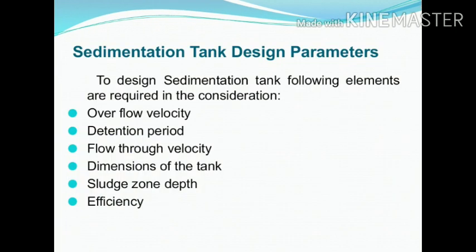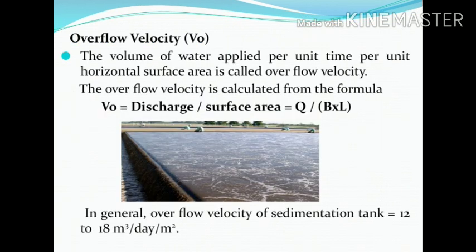Sedimentation tank design parameters. To design a sedimentation tank, the following elements are required: overflow velocity, detention period, flow-through velocity, dimensions of the tank, sludge zone depth, and efficiency. The first parameter is overflow velocity, denoted by V₀. The volume of water applied per unit time per unit horizontal surface area is called overflow velocity, also known as surface loading rate or surface overflow rate. The overflow rate must be less than the settling velocity of the particle; otherwise the particle will escape without settling.